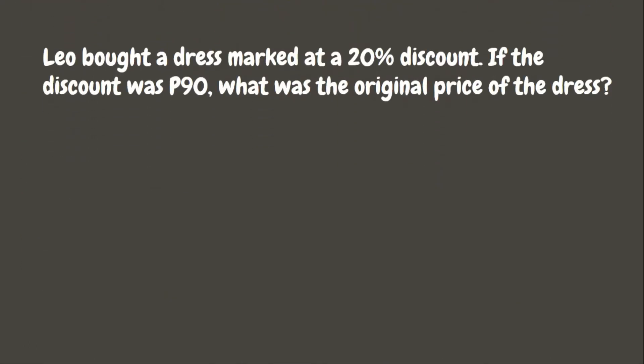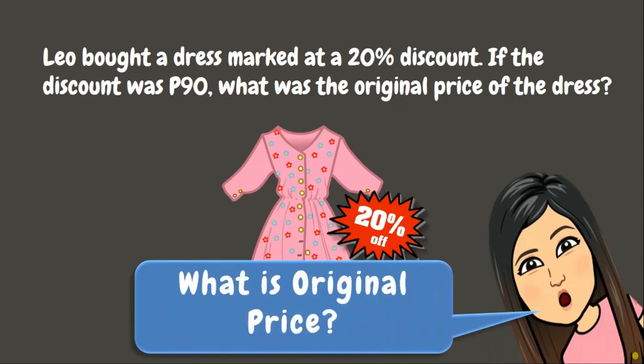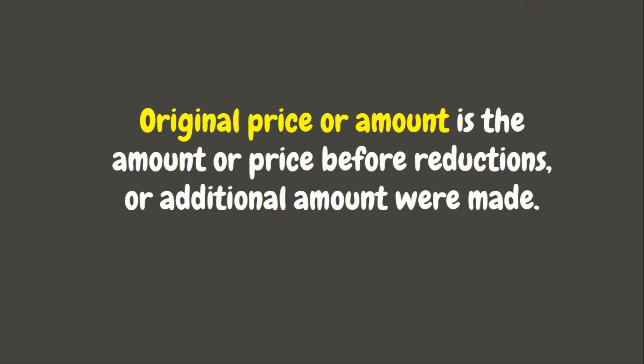Let's try our first example. Leo bought a dress marked at a 20% discount. If the discount was 90 pesos, what was the original price of the dress? Original price or amount is the amount or price before reductions or additional amounts were made.